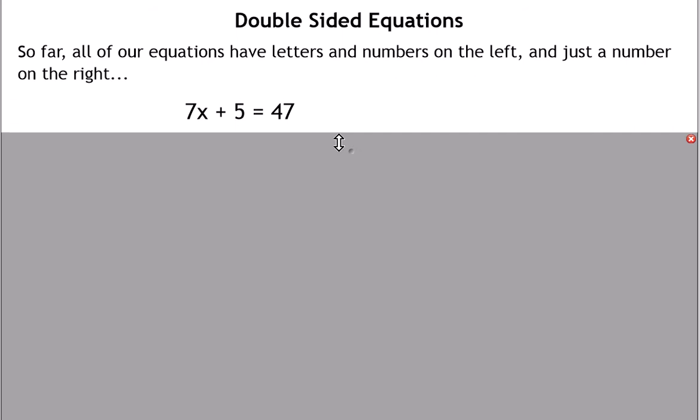You may not have noticed so far, but all of the equations you've solved have had letters and numbers on the left — like a mix. So you've had the letter x on the left, but on the right there's only been a number. If you look back in your book, on the right-hand side you've only ever had just a number.